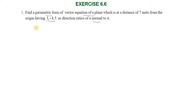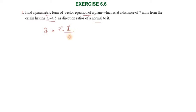The formula for the parametric form of vector equation of a plane is: r vector dot d-hat equal to p, where d-hat is d vector divided by the modulus of d vector. Here, the distance p equals 7.